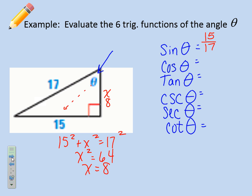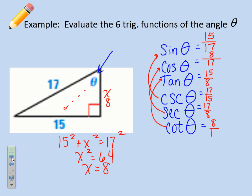Now we can continue. Cosine is adjacent over hypotenuse: 8 over 17. Tangent is opposite over adjacent: 15 over 8. For the reciprocal functions — cosecant is hypotenuse over opposite: 17 over 15. Secant is hypotenuse over adjacent: 17 over 8. And cotangent is adjacent over opposite: 8 over 15. So we can use the first three to help easily generate the last three.